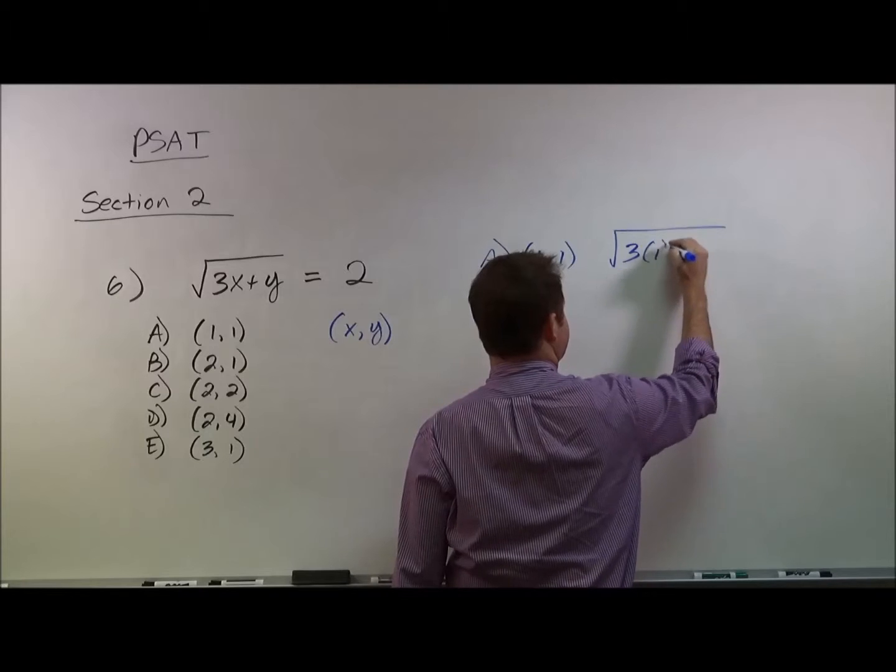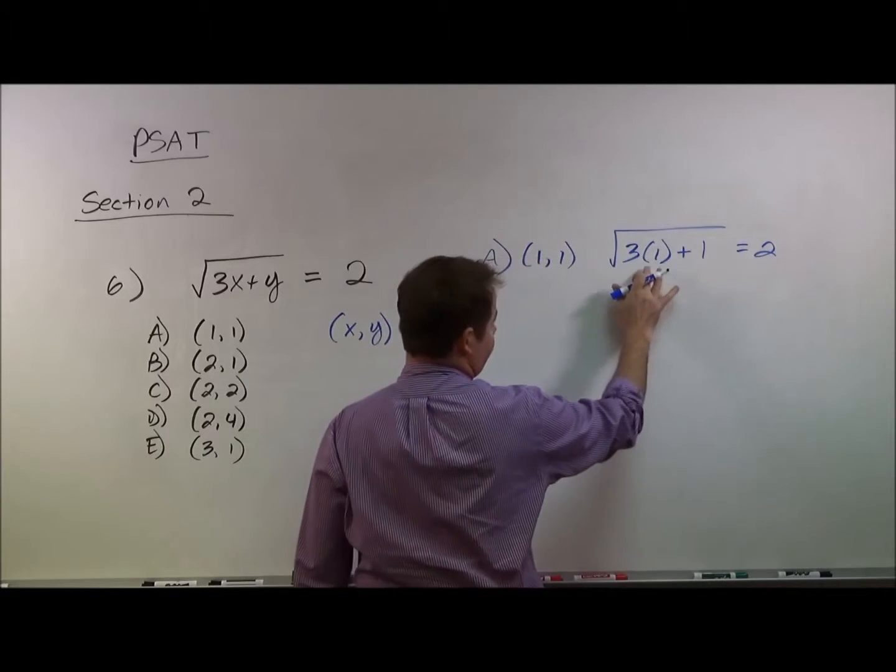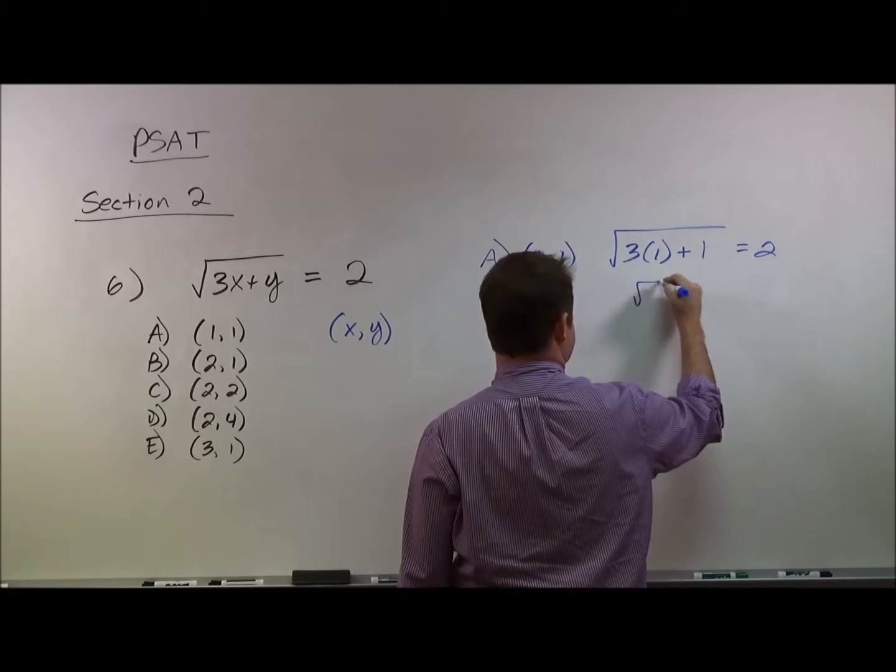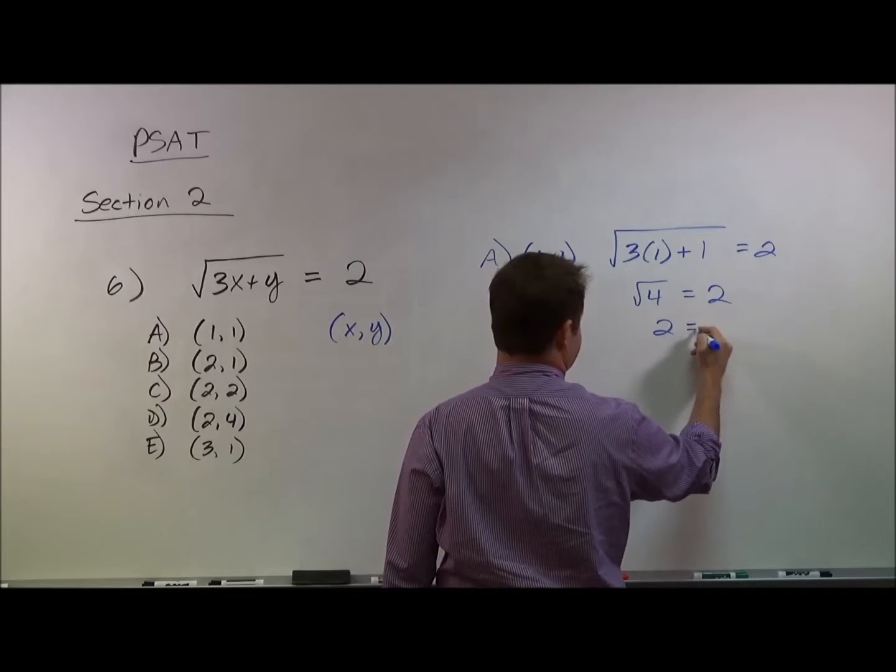So we have 3 times 1 plus 1 equals 2. 3 times 1 is 3 plus 1 is 4. So this gives us square root of 4 equals 2. And that, in fact, does work out.